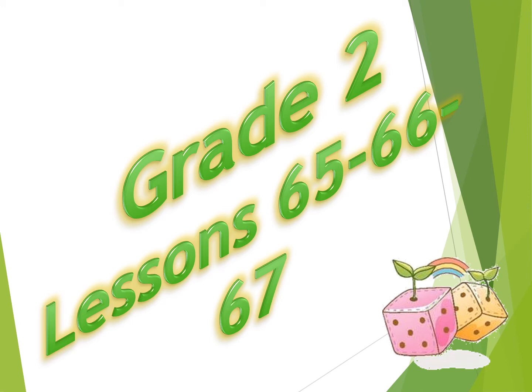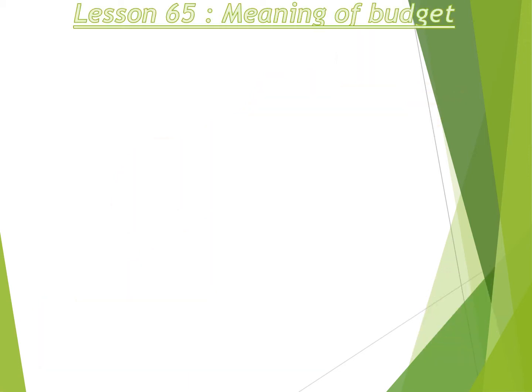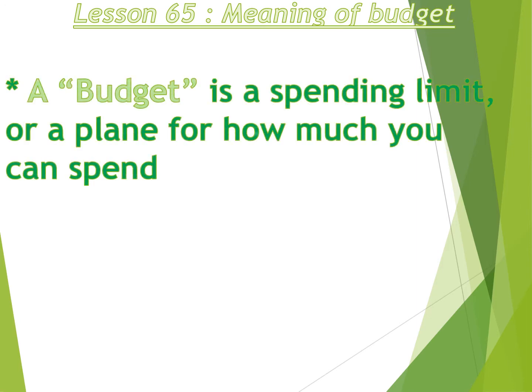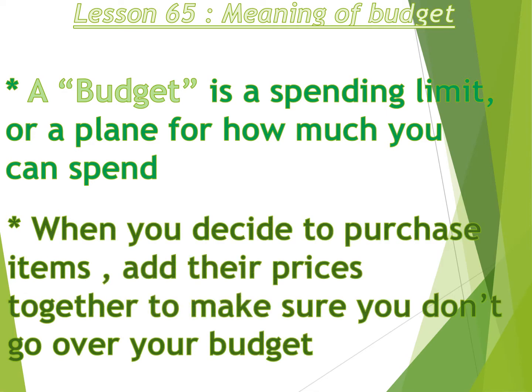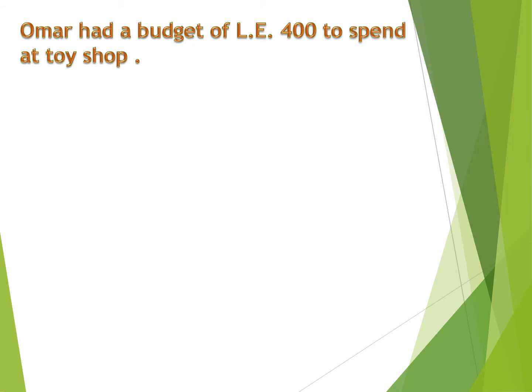Hello, great to lessons 65, 66, and 67. Lesson number 65: the meaning of budget. A budget is a spending limit or a plan for how much you can spend when we decide to purchase items. We add their prices together to make sure you don't go over your budget.